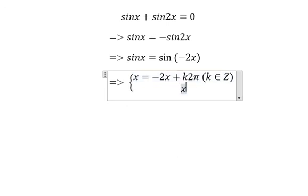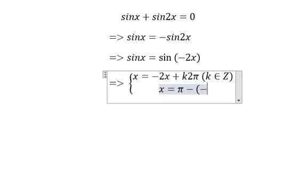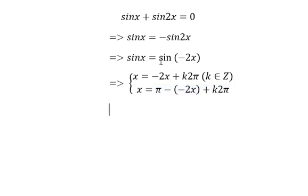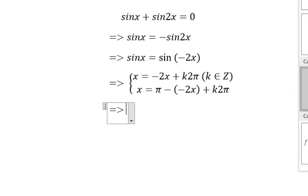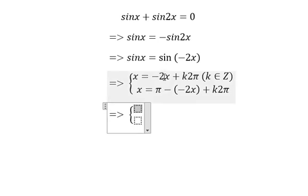We also have x equals π minus negative 2x plus k times 2π. So we can simplify. Negative 2x put on the left, so we got 3x equals k times 2π.